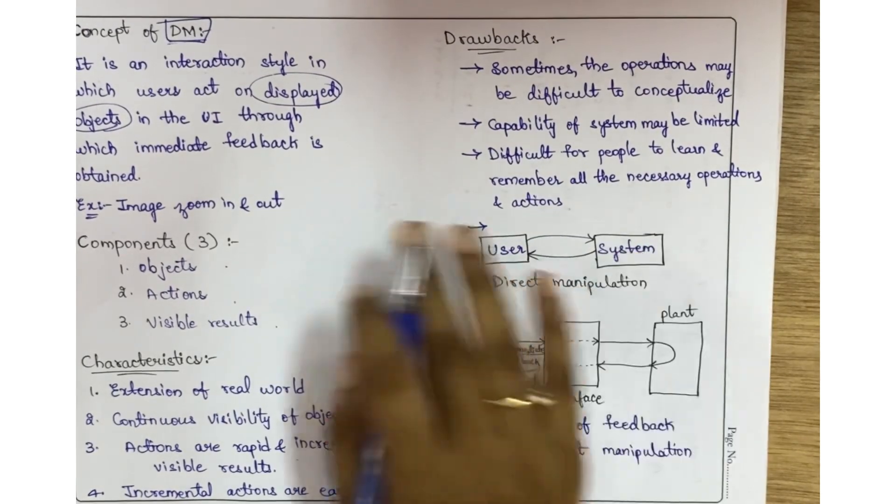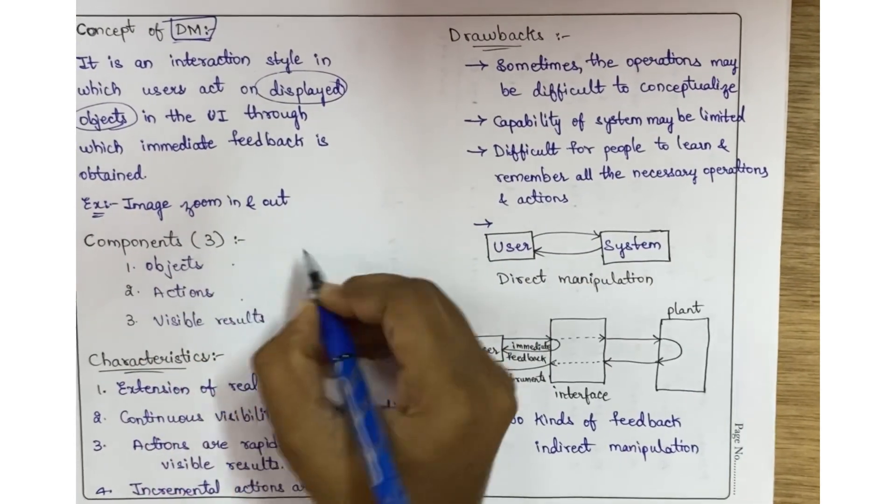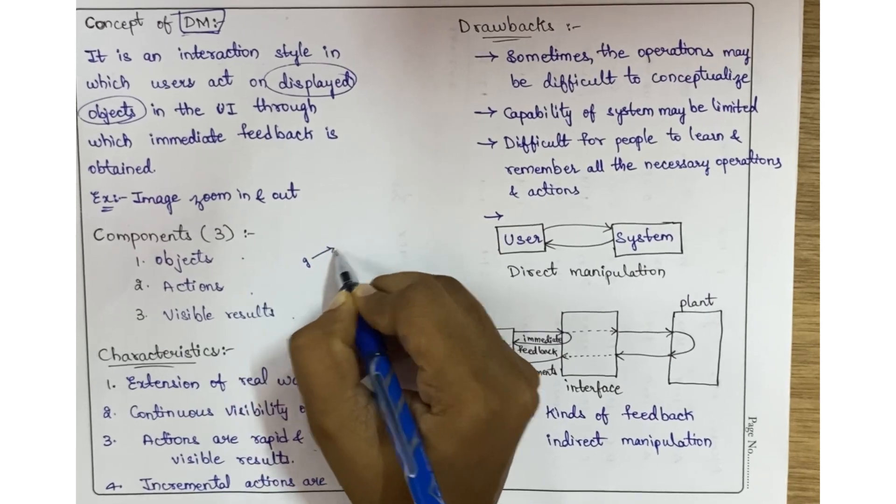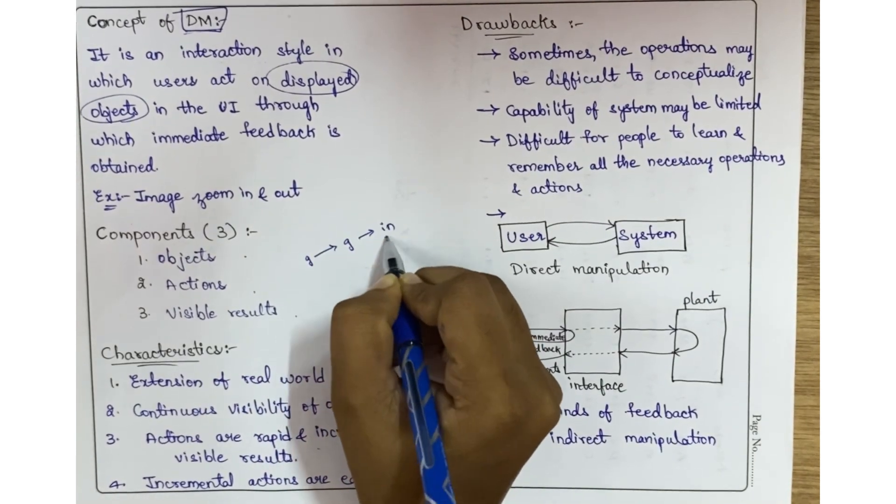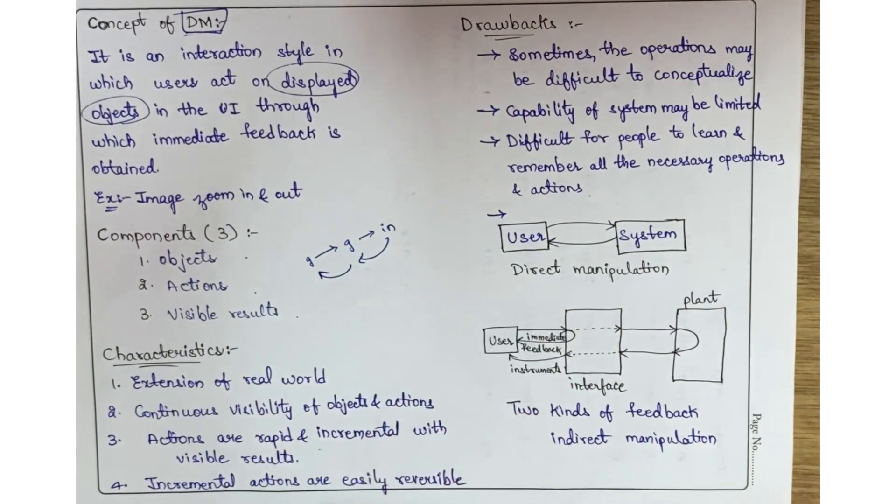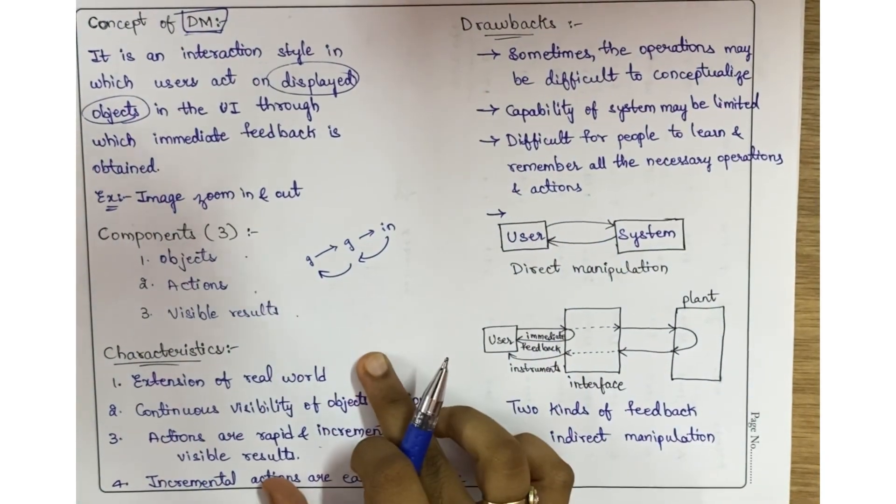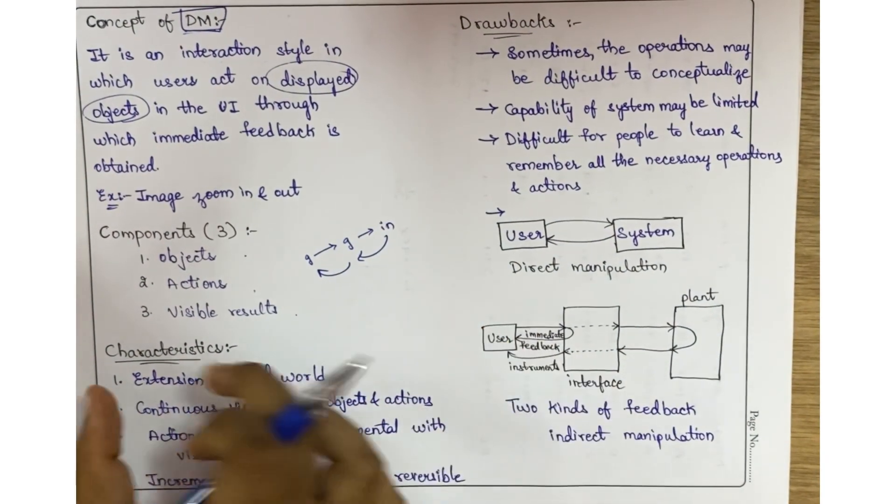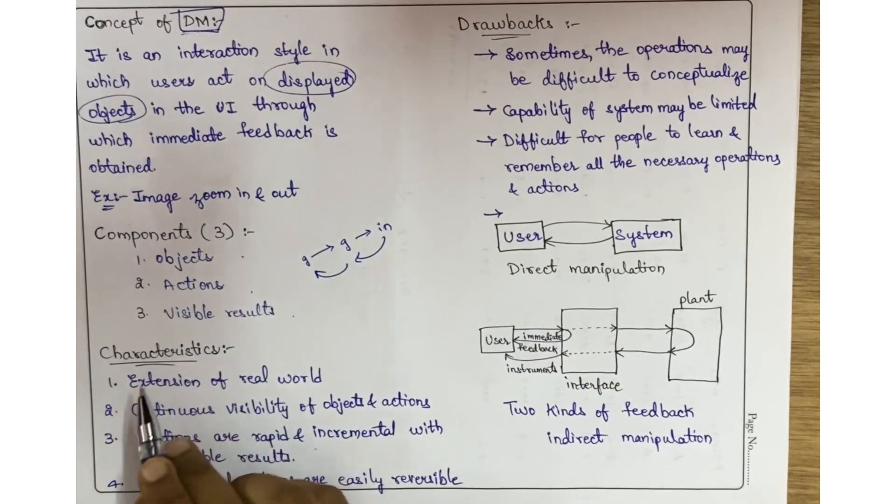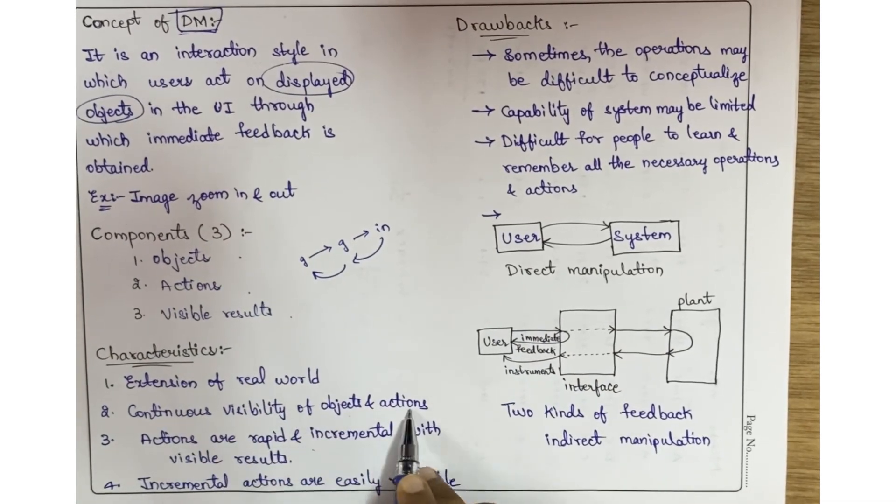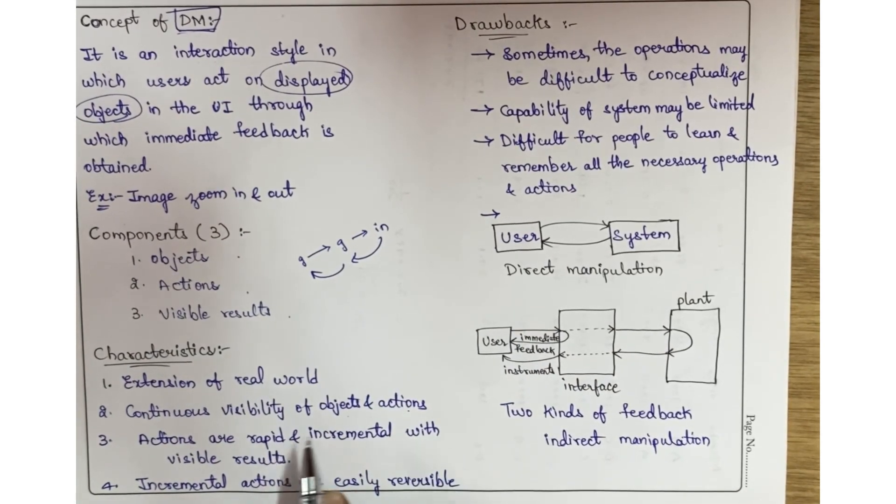The final characteristic is that incremental actions are easily reversible. You have navigated through Google Chrome, then Gmail, then inbox, and the back steps are also possible - it is reversible. These four characteristics are very important: extension of real world, continuous visibility of objects and actions, rapid and incremental actions with visible results, and reversible actions.